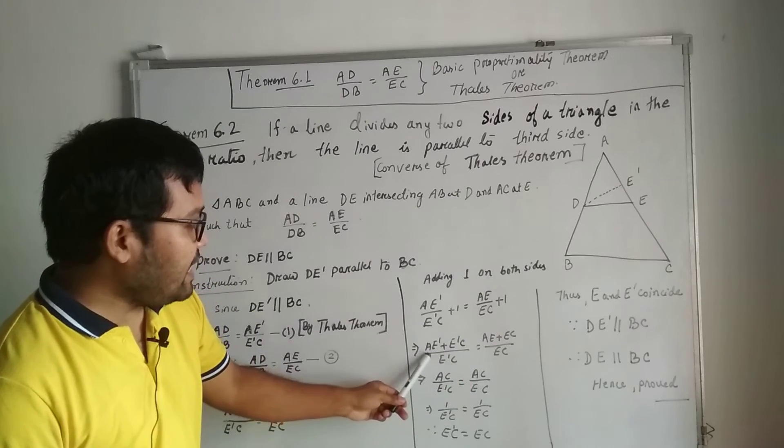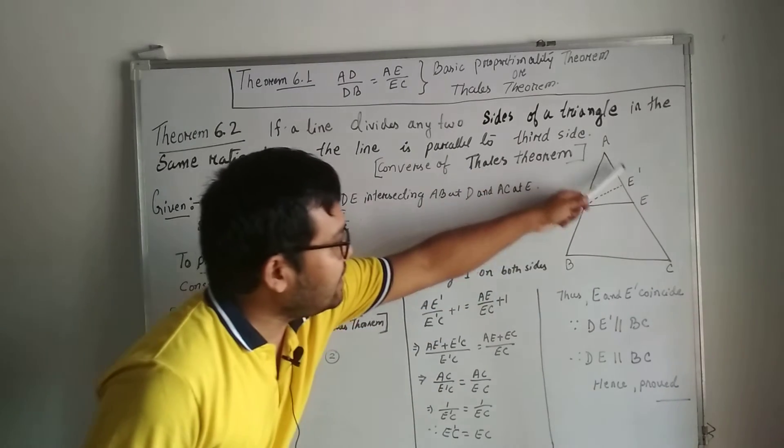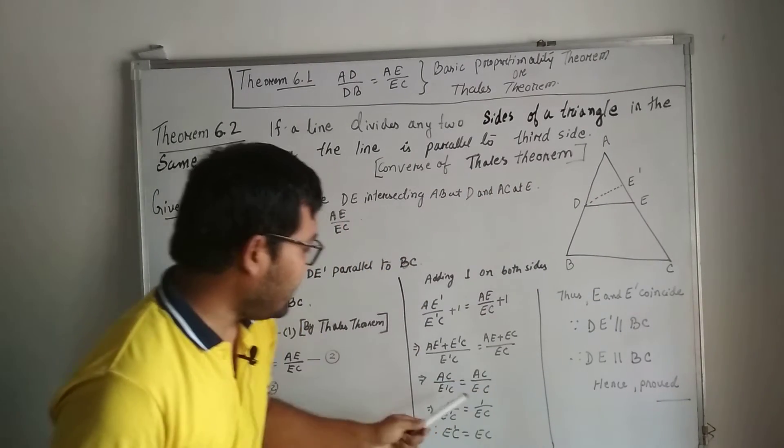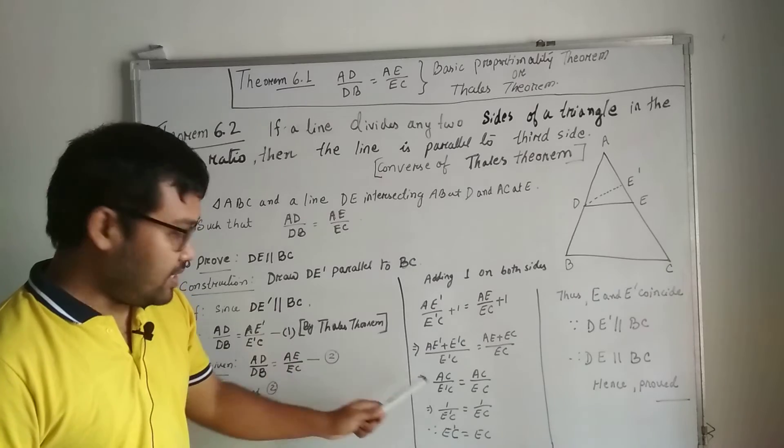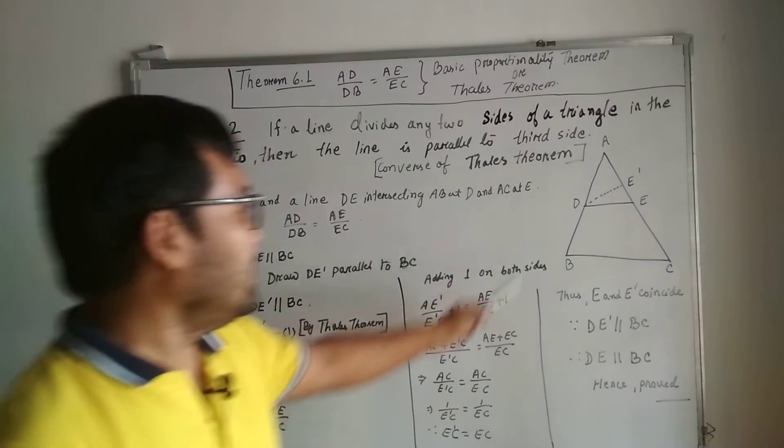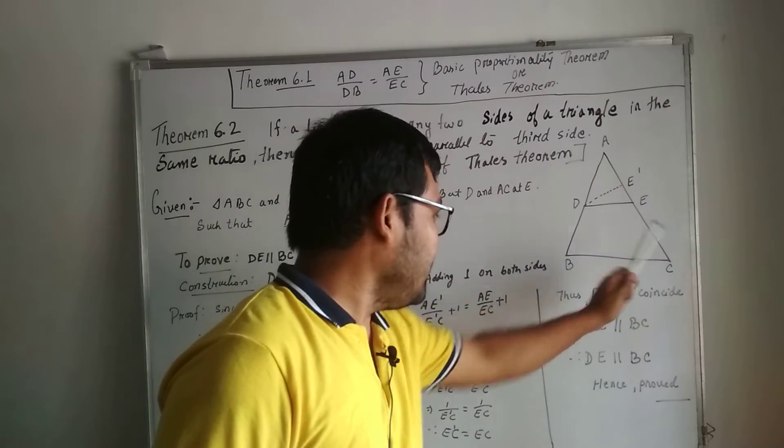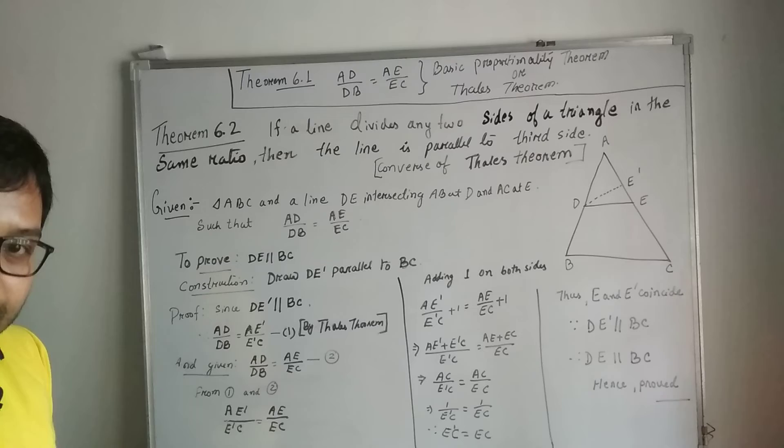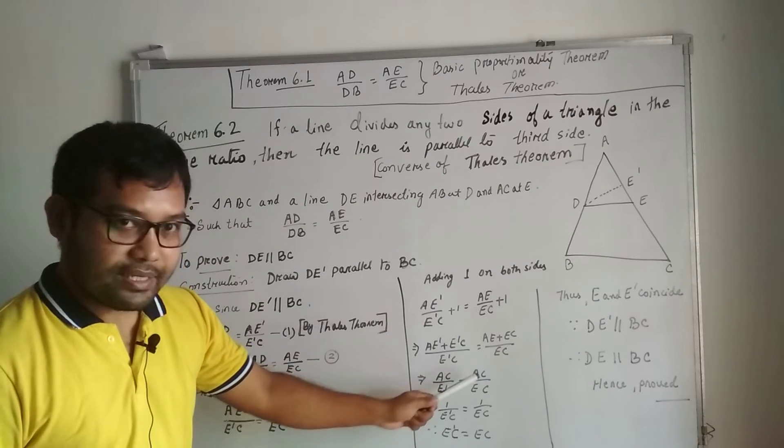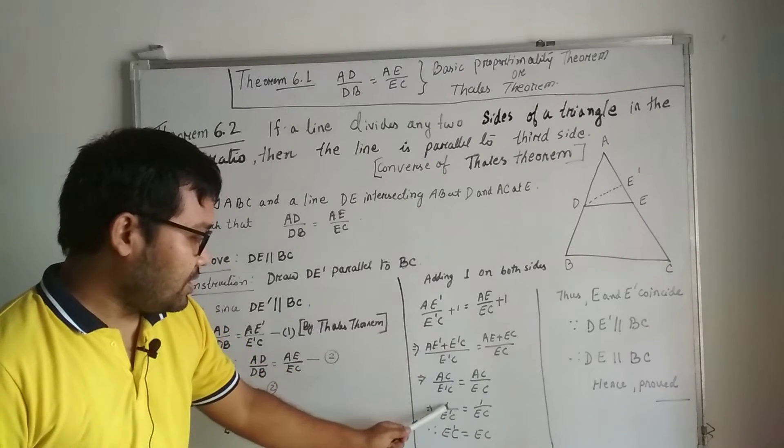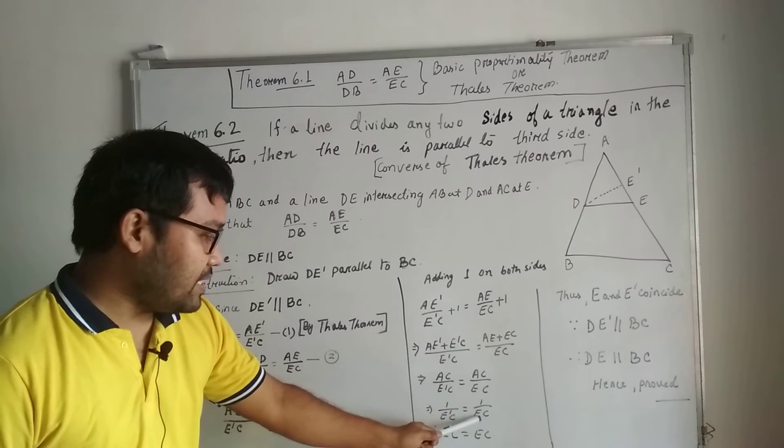Taking LCM, we have AE' plus E'C over E'C, which is nothing but AC over E'C. Similarly, AE plus EC is AC, so we get AC over E'C equals AC over EC. Cancel AC on both sides, we got one over E'C equal to one over EC.